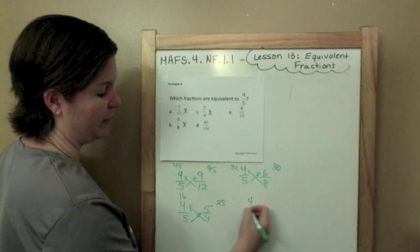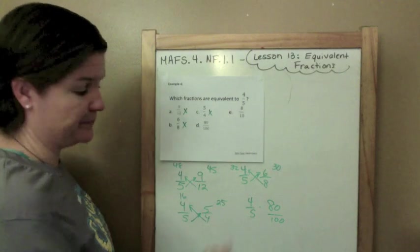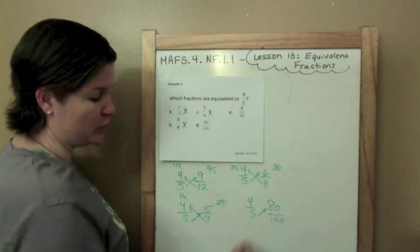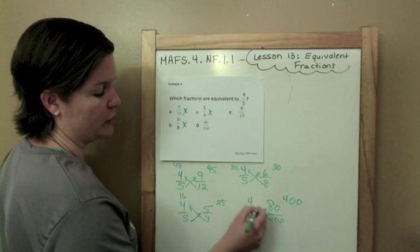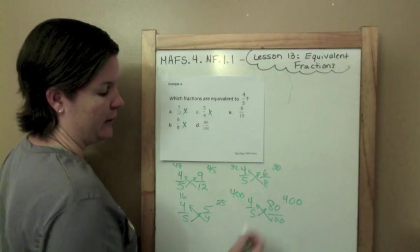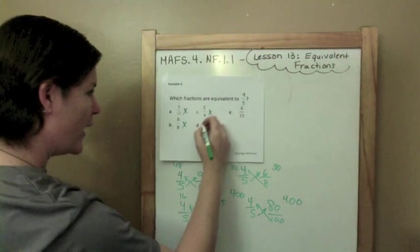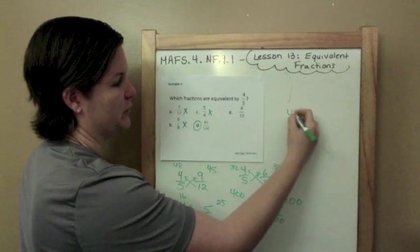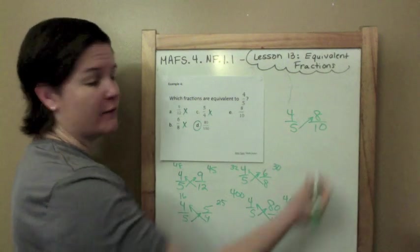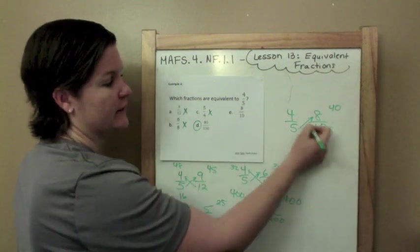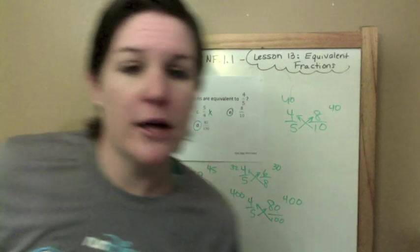4 fifths, see if that's equal to 80 one hundredths. Oh my gosh, this is a big one. 5 times 80, 5 times 8 is 40 with that 0, 400. 100 times 4 is 400. Is 400 equal to 400? Yes! Woo! That's right. Okay, let's check 8 tenths. I'll do it up here. 4 fifths equal to 8 tenths. 5 times 8, 40. 10 times 4, 40. Is 40 equal to 40? Yes it is. So E and D are the answers!